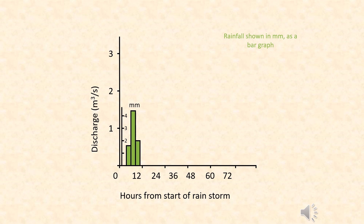Preceding most floods, we get a rainstorm or a certain amount of precipitation. This is plotted on the graph using bars to indicate the amount of rainfall and how long it took for that rainfall to reach the ground.